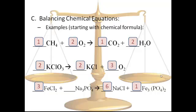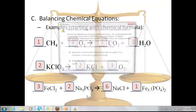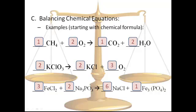Now my Fe's match and my Cl's match. Check the Na's: on the left I have three Na's, on the right I actually have six. To get from three to six, we double. Now the last thing to check is phosphate, PO4: on the left I have two PO4's, and on the right I also have two PO4's. Double-check: three Fe's on both sides, six Cl's on both sides, six Na's on both sides, and two phosphate groups on both sides. We are all set.